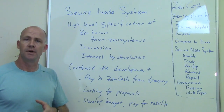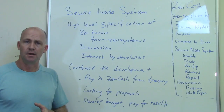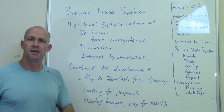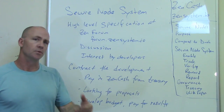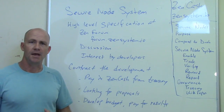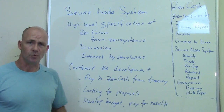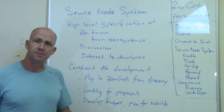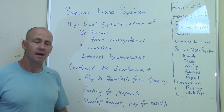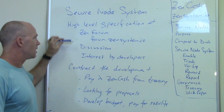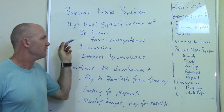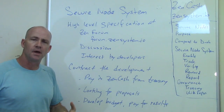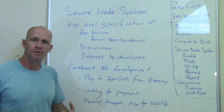Right now, we can get things going by putting together a straightforward system that will put out a challenge, nodes will respond to it, we'll track those responses, and then we'll do a pay cycle on a regular basis — like every one to two weeks — to reward nodes for the number of valid responses that they've sent back.